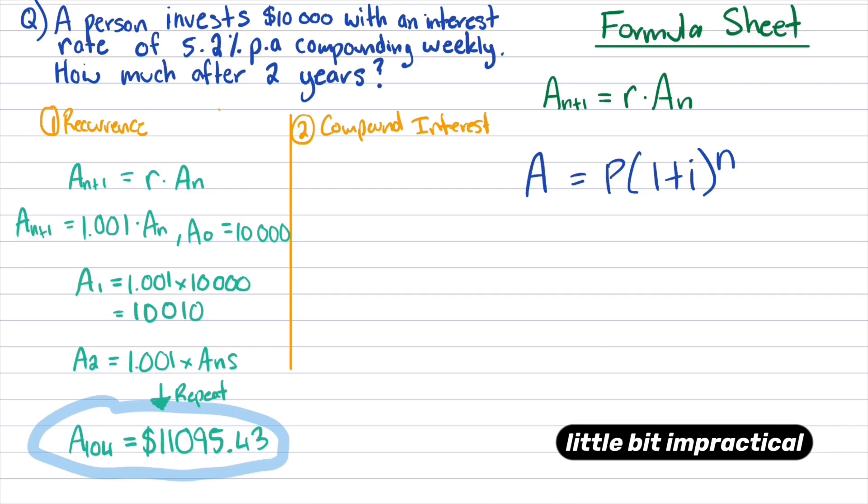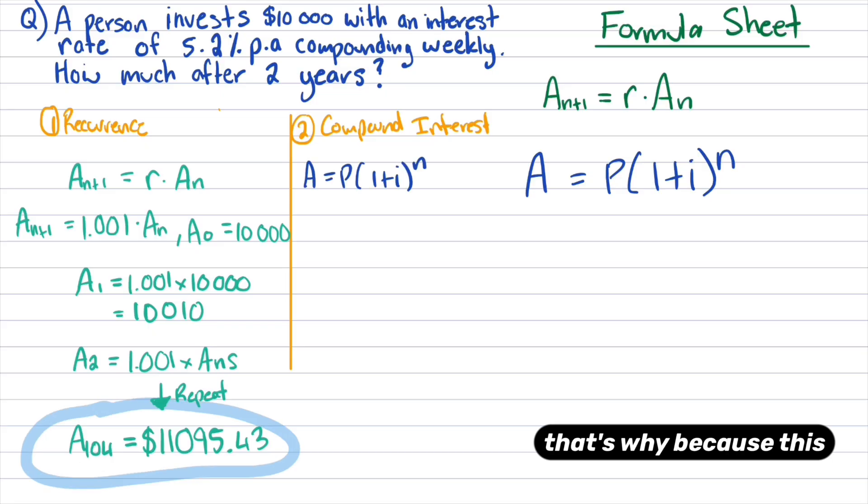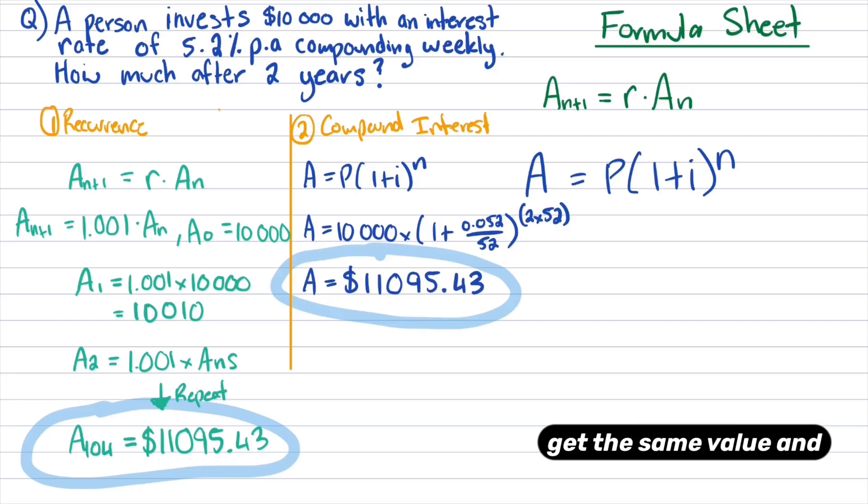Now you can see how it's a little bit impractical having to hit the equals button 104 times. So that's why, because this is a long-term investment, we would typically want to use the compound interest formula instead. But we're going to see in a second that you get the same answer regardless. So if I substitute everything into my compound interest formula, like I've just done here, and hit equals, notice I get the same value, and you can try this yourself. Feel free to use the calculator trick and hit the equals button 104 times on your own, just to verify that I'm telling the truth.